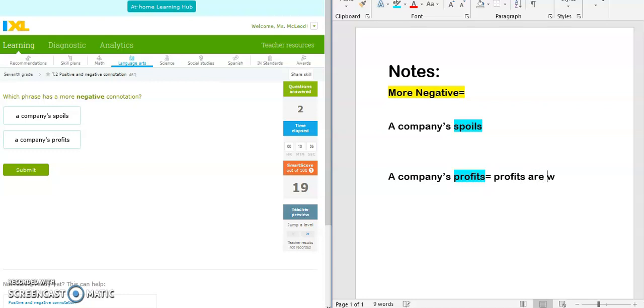So a company's profits. What are profits? Profits are what a company makes selling or performing work. It's the company's money. That doesn't seem like such a bad thing. Companies' profits, that sounds pretty nice. So let's look at spoils.